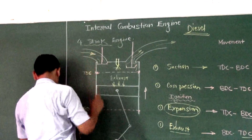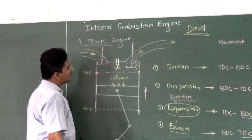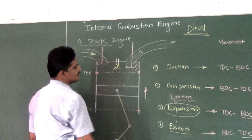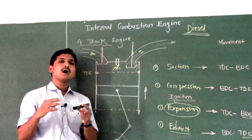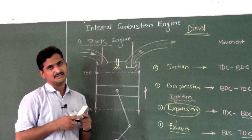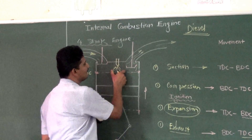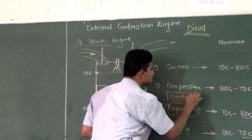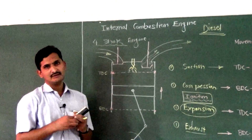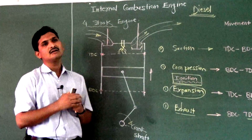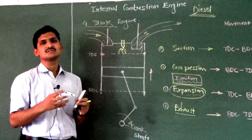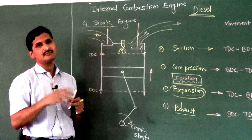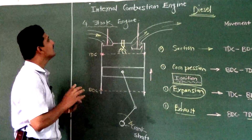In the diesel engine's suction process, only air is sucked in — not an air-fuel mixture. In compression, only air is compressed. After compression, fuel is injected by the fuel injector. The compressed air has a temperature above the ignition point of diesel, so when diesel is injected it burns automatically — no spark is needed. After burning, the expansion stroke occurs, followed by the exhaust stroke. The key difference is: petrol engine uses a spark plug and carburetor, while diesel engine uses a fuel injector and takes in only air during suction.